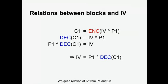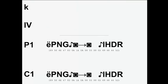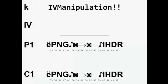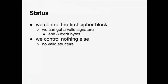So basically, if we know that we want the file to encrypt such that the first ciphertext block is a specific value, and we know what the file originally starts with, we can craft an IV to make it work. We decrypt the ciphertext and XOR with P1 — we have this formula. We choose a random key, apply the formula, and get an IV that turns P1 into C1 using standard ECB mode decryption. This gives us a valid signature in the first cipher block. Because the block is 16 bytes and the signature is 8 bytes, we have 8 extra bytes — we control nothing else so far, but it's better than nothing.